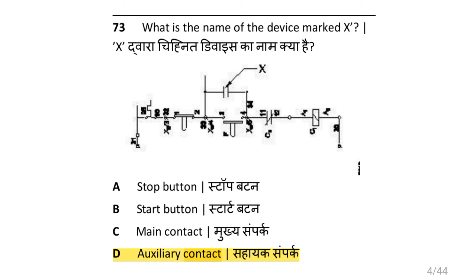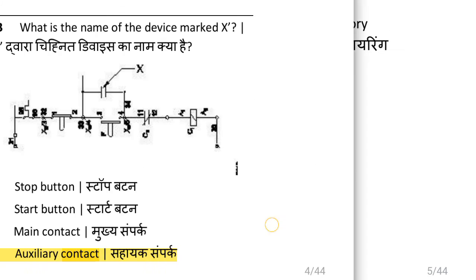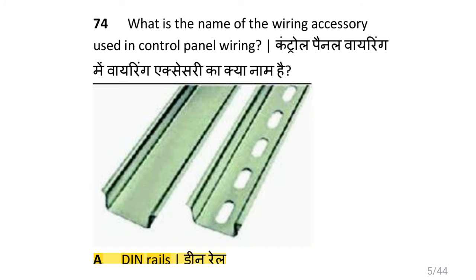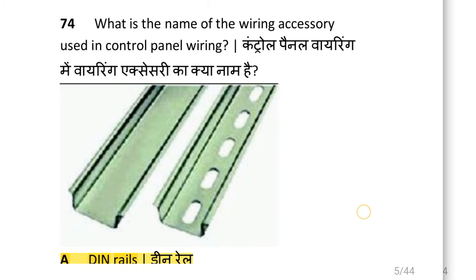What is the name of the device marked X? i.e. auxiliary contact. What is the name of the wiring accessories used in control panel wiring? i.e. DIN rail.